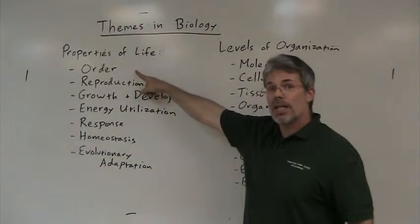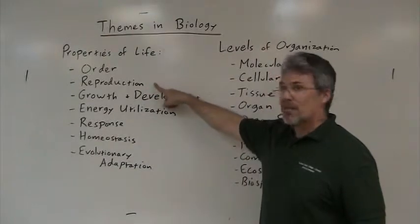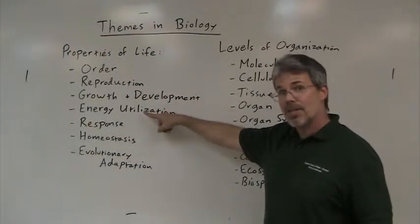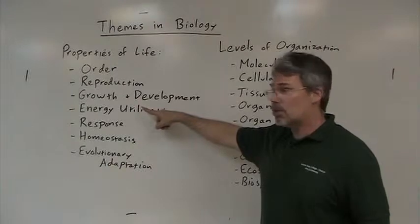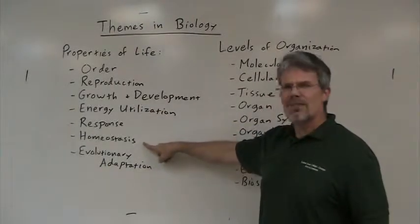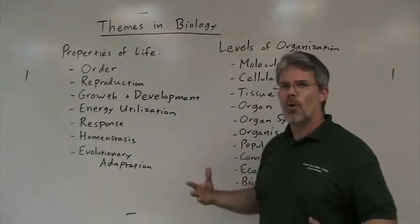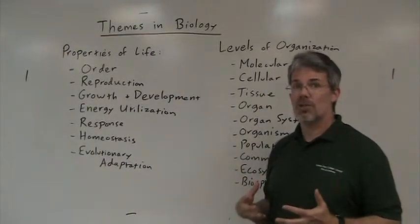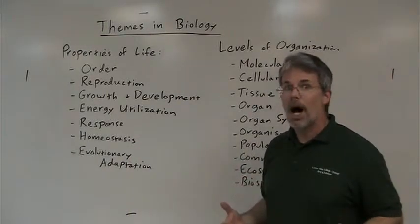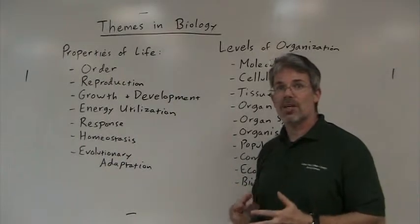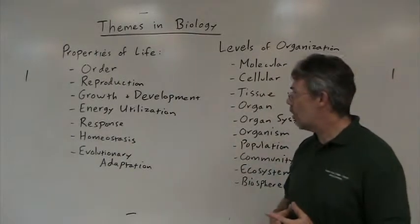Living things are highly ordered and complex. Living things reproduce. Living things grow and develop. Living things take in and utilize energy. Living things respond to their environment. Living things have homeostasis — that's just a fancy word for internal balance, an effort to keep a constant internal environment, such as body temperature. Every living thing tries to maintain at least some constancy of the internal environment.